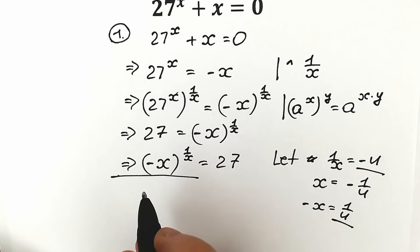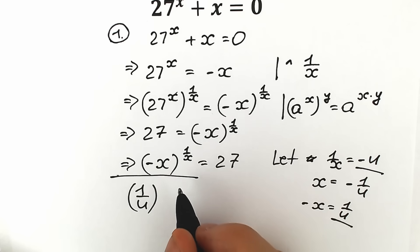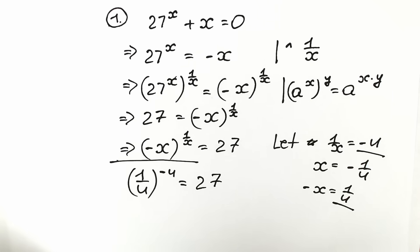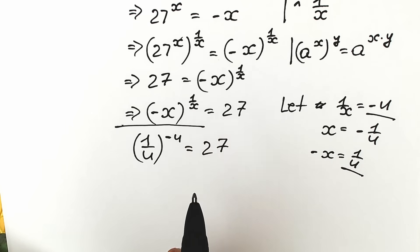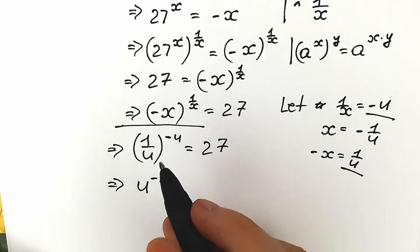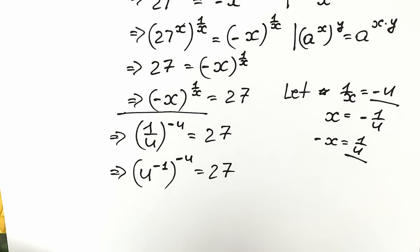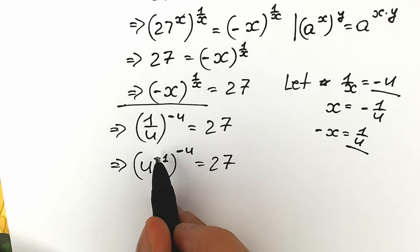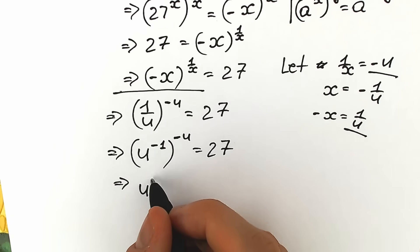After substitution, we plug in 1 over u for minus x, and minus u for 1 over x. We get 1 over u to the power minus u equals 27. We can rewrite 1 over u as u to the power minus 1, so we have u to the power minus 1, raised to the power minus u, equal to 27. Multiplying the exponents: minus 1 times minus u equals u. So we get u to the power u equals 27.